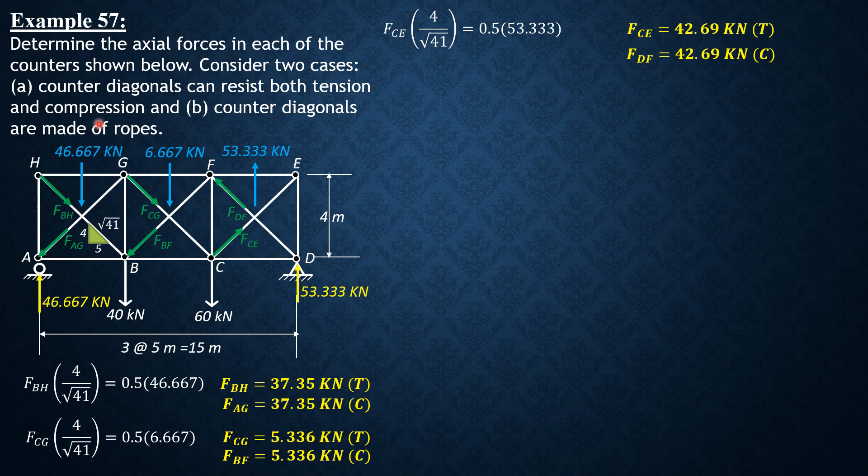Then by assumption B, counter diagonals are made of ropes. So all these compression members must be zero. So FBH vertical component is equated to the panel shear because it is the only active tension diagonal which will resist this panel shear. So it is now 74.7 kN tension while FAG is zero automatically.